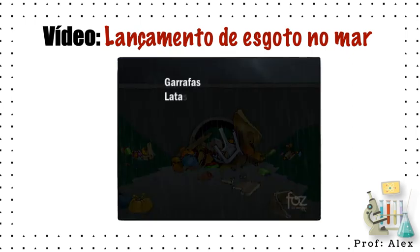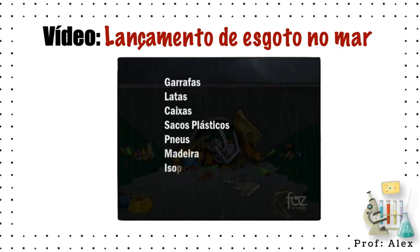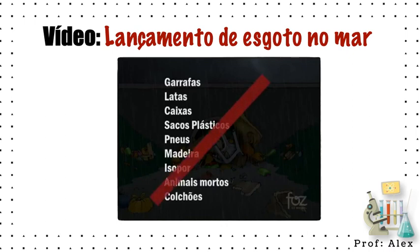Garrafas, latas, caixas, sacos plásticos, pneus, madeira, isopor, papelão, animais mortos e colchões, quando descartados nas ruas, rios ou riachos, além de poluir o ambiente, entopem as redes de águas pluviais ou de esgoto.